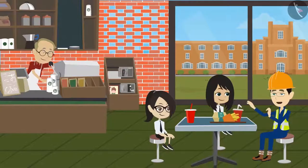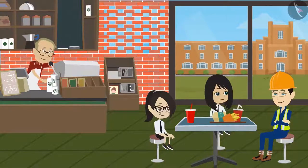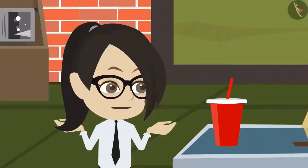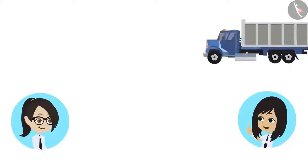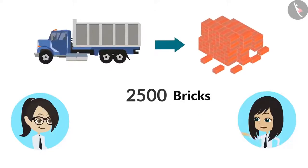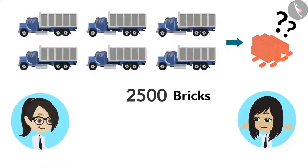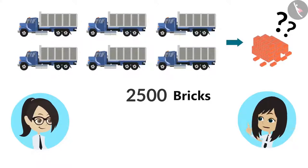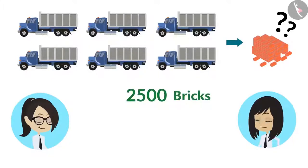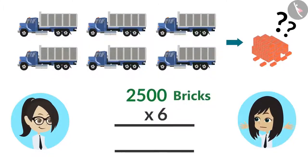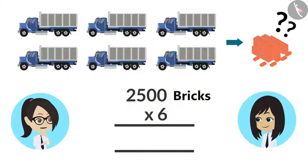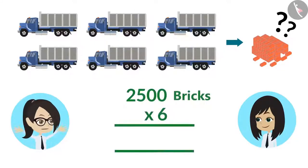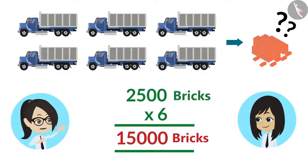That is why I said 6 trucks of bricks. Now we can count the total number of bricks. How? It is very easy. One truck has 2500 bricks. So to calculate the total number of bricks, multiply 2500 by 6. If we multiply 2500 by 6, our answer will be 15,000.